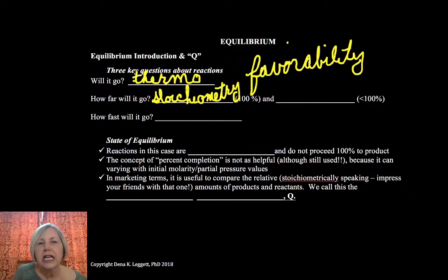Stoichiometry covers reactions that proceed 100% to make product or effectively 100% to make product. And then there are others that we're going to be talking about and introducing now. That's an equilibrium.